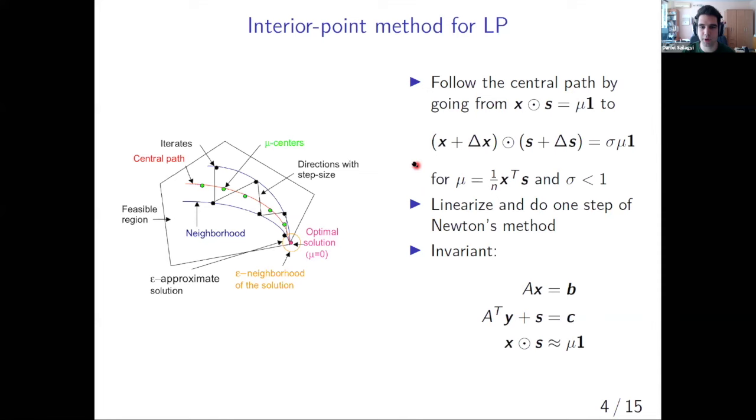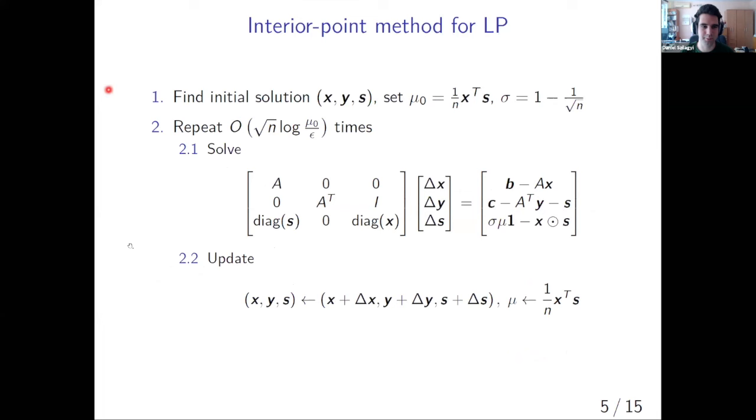So how exactly do we move from one point to the other on the central path? We just perform one step of Newton's method. Obviously, we need to linearize our complementary slackness condition. But nevertheless, by performing one step of Newton's method at a time and reducing our duality gap, we are able to slowly reach the optimum. During this entire algorithm, we keep an invariant. That invariant says that the element-wise product of x and s is equal to the duality gap. So obviously, since the duality gap decreases, the element-wise product decreases as well. Once the element-wise product is small, the duality gap is small as well.